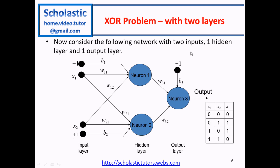This is the following network with one hidden layer and one output layer. Each input is connected to the first neuron and the second neuron in the hidden layer. The outputs of neuron one and neuron two are connected to neuron three in the output layer. The weights are W11, W12, W21, W22. There are two biases B1 and B2 for the hidden layer, and another bias B3 for the output layer. Each neuron has its own bias.